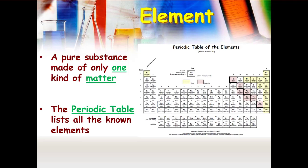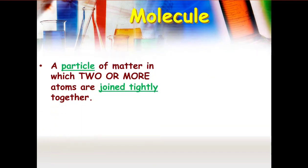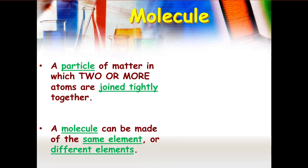So an element is, as we said, a pure substance made of only one kind of matter. A molecule is a particle of matter in which two or more atoms are joined tightly together. Now the way they're joined, there's a few different ways. We don't really go into that in sixth grade, but there are different types of bonds that hold molecules together. A molecule can be made of the same element or it can be made of different elements.